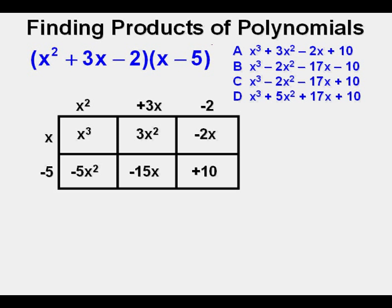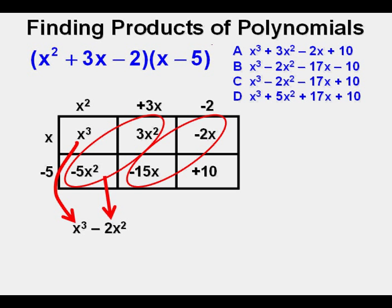The next step is to recognize if we have any like terms. We have our x squareds here negative 5x squared and 3x squared and we have our x's here negative 15x and negative 2x. We bring down x cubed and the next thing we do is bring down the x squareds and negative 5x squared plus 3x squared is negative 2x squared. Then we bring down the x's and negative 15x plus negative 2x is negative 17x and at the last we bring down our final term plus 10. So it looks like our correct answer is c.